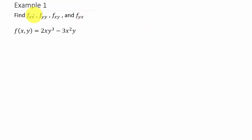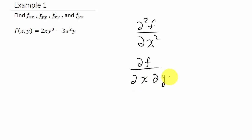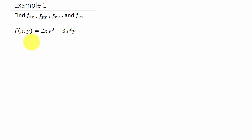The notation fxx is the second partial with respect to x. fyy would be the same thing but with y instead. fxy would be written as the partial of f with respect to x and then with respect to y.